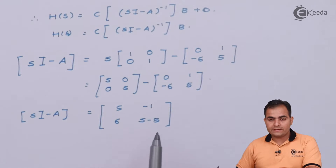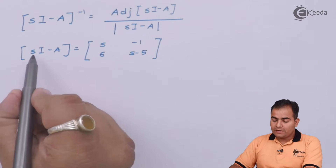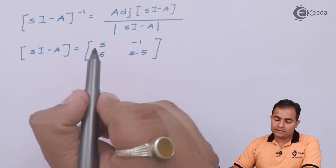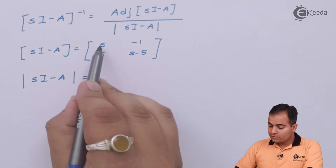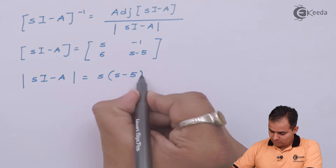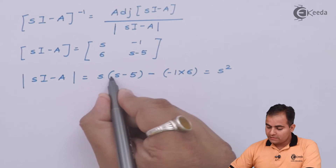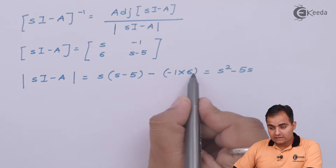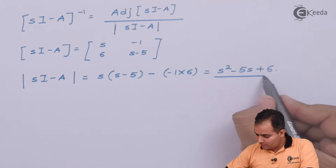Now we find the inverse of this matrix. The inverse equals the adjoint of (sI - A) divided by the determinant of (sI - A). First, let's find the determinant: S·S = S², S·(-5) = -5S, and (-1)·6 = -6, but subtracting a negative gives +6. So the determinant is S² - 5S + 6.